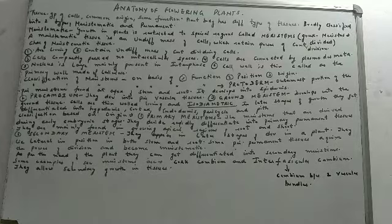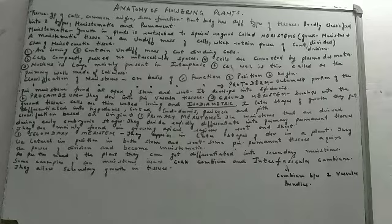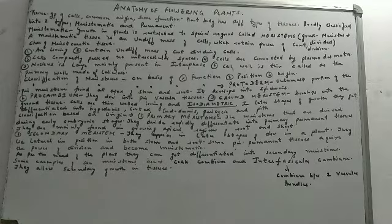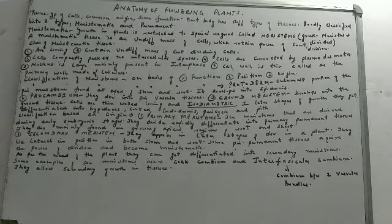Now let's move on to the classification of meristems. Meristems can be classified on the basis of three parameters: first is function, second is position, and third is origin. In this video I will be taking up function and origin. In the next video we will discuss classification of meristems on the basis of position.